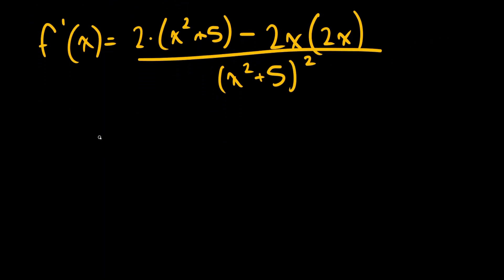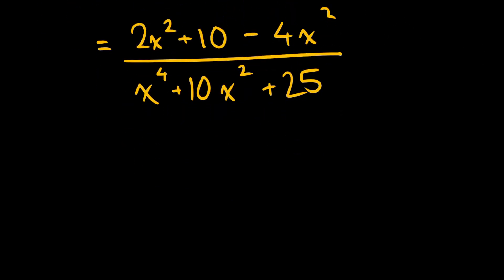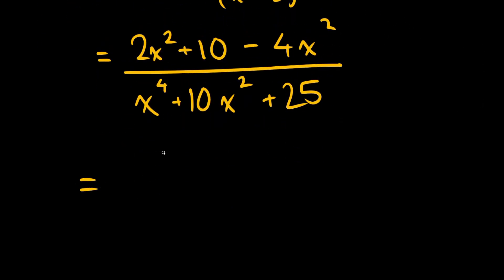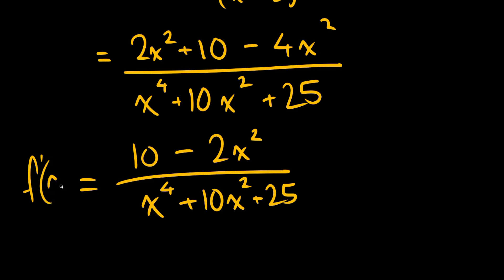Just a little bit of algebra here. You'll get 2x squared plus 10 minus 4x squared, divided by — expanding the denominator — x to the fourth plus 10x squared plus 25. Simplifying the numerator, you'll get 10 minus 2x squared divided by x to the fourth plus 10x squared plus 25 as your answer for the derivative.